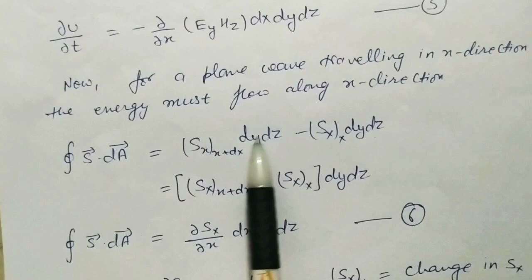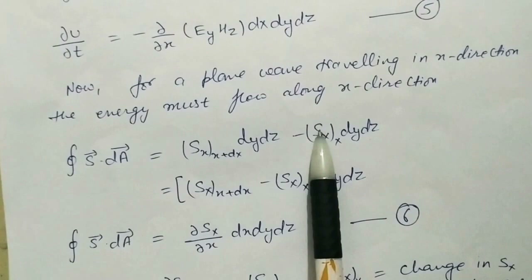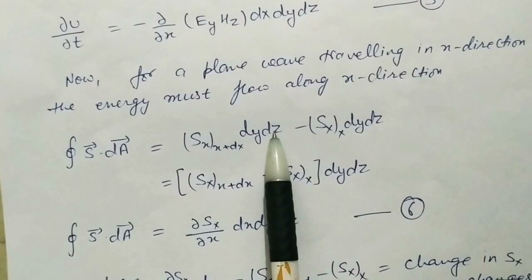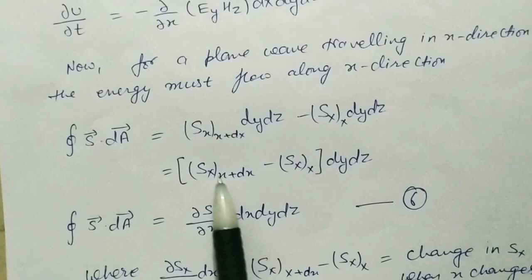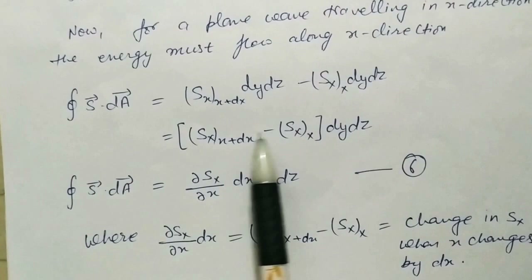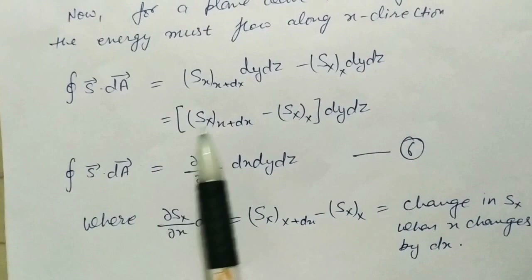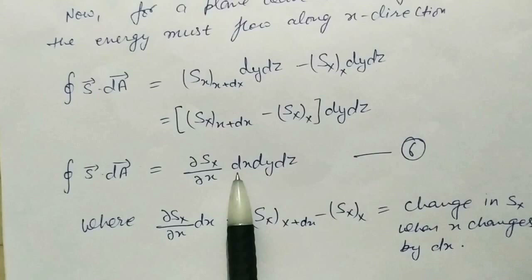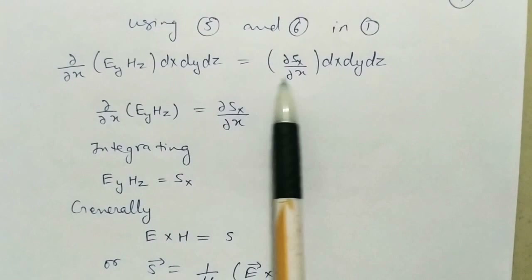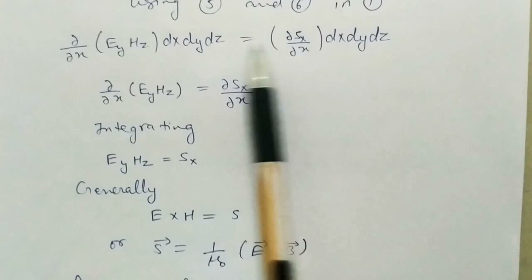S at position (x + dx) into area dy·dz, minus S at position x into dy·dz, where dy·dz is the area perpendicular to the x-direction — that is the direction of propagation of the wave. This difference represents the change in S with respect to x. Taking this expression and equating equations 5 and 6, then substituting into the first equation, we obtain a new equation through simple mathematical calculations.